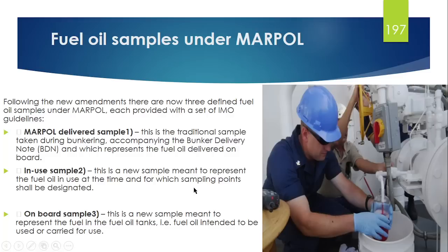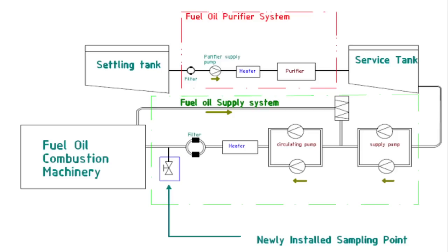The second sample is the In-Use Sample. In-Use Sample means the sample which represents what you are currently consuming. This is the basic fuel oil system in which one sampling point is provided near to the main engine. From the settling tank, through the purifier, then the service tank, supply pump, circulating pump, heater, and filter — before going to the main engine there is one sampling point. That sample is called the In-Use Sample.